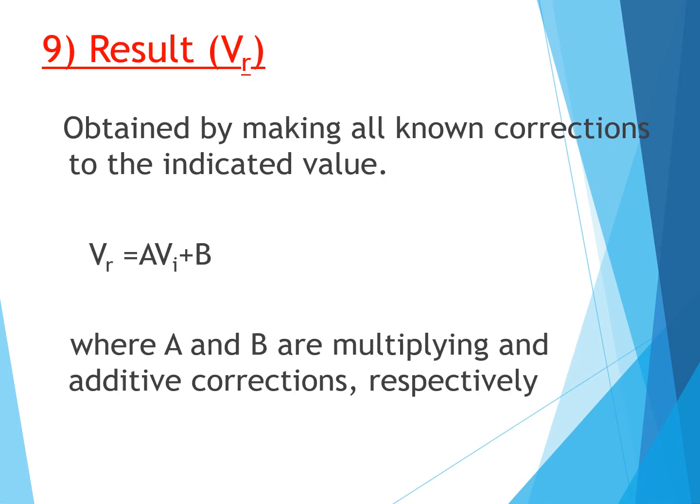The next term is result. It is obtained by making all known corrections to the indicated value. Where A and B are multiplying or additive corrections: Result = A·VI + B. These constants are applied to VI to obtain the result.